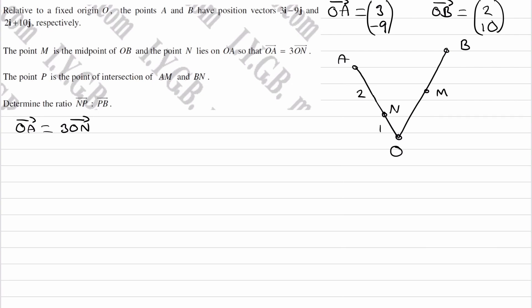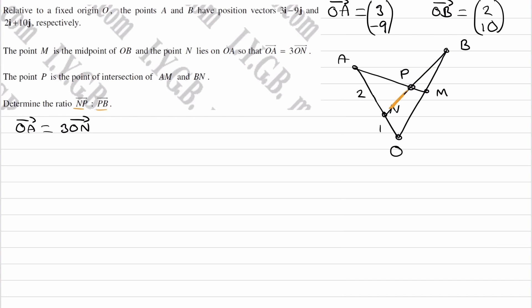P is the intersection of AM and BN. AM is this line, BN is that line, and P is the point of intersection. We're trying to work out the ratio of NP to PB — this length to this length. We don't know where P is along this line, so that's what we want to work out.